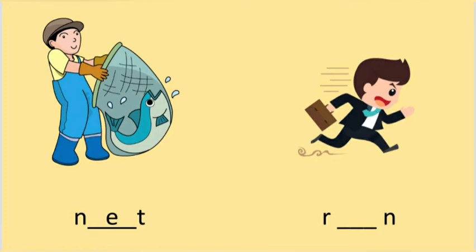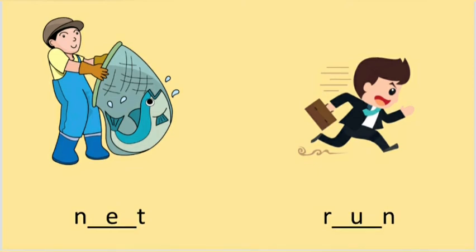The next picture is run. Run. R-un, run. Which is the correct vowel? It's A. R-un, run. The correct answer is A. Run. R-un, run.